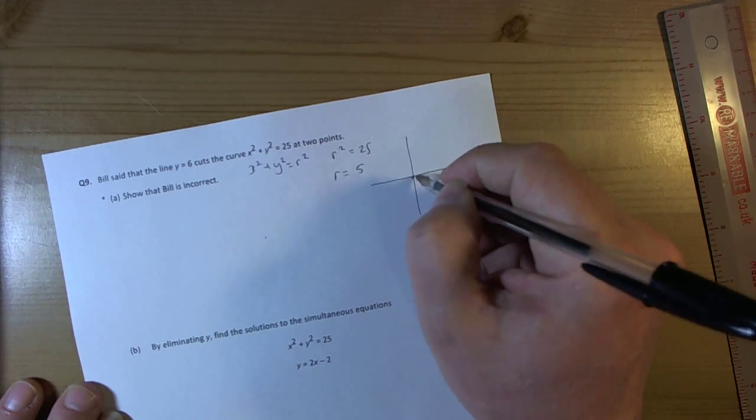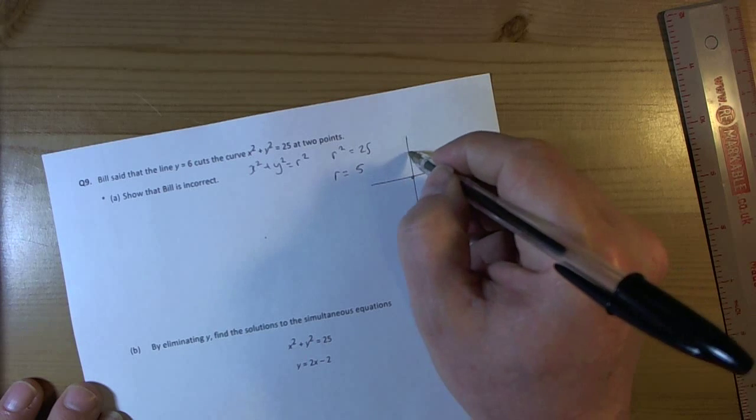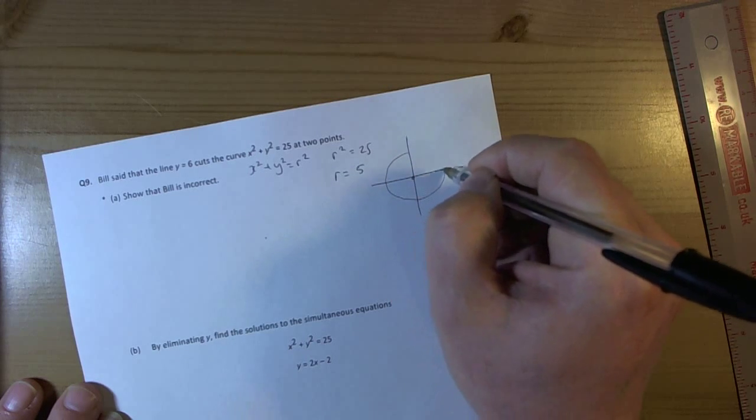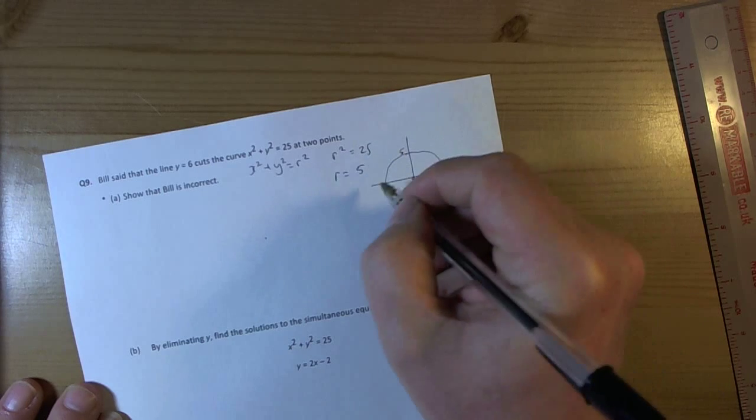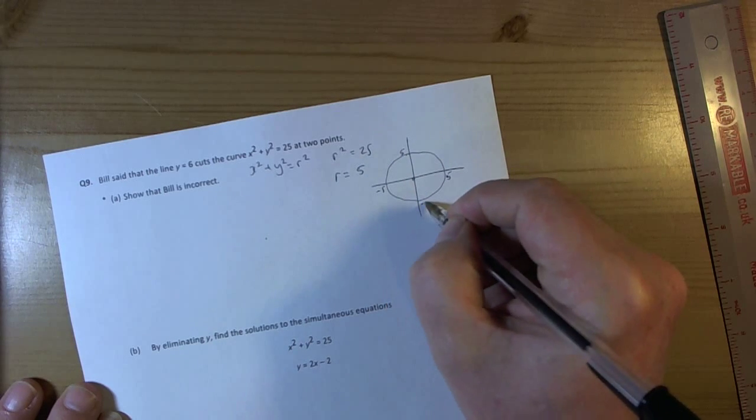So we've got a circle with the center at 0, 0 and its radius is 5, so that coordinate will be 5, that coordinate will be 5, that will be negative 5 and that will be negative 5.